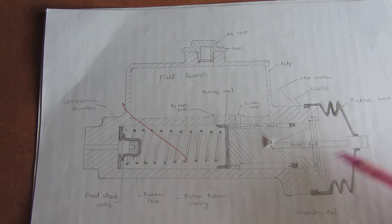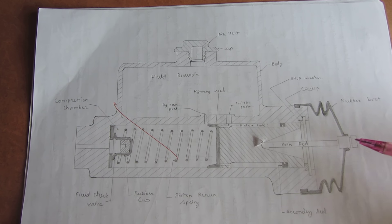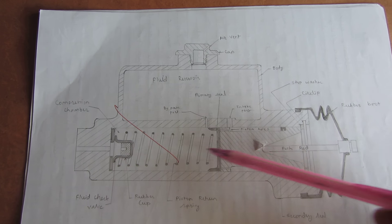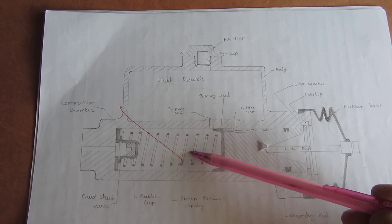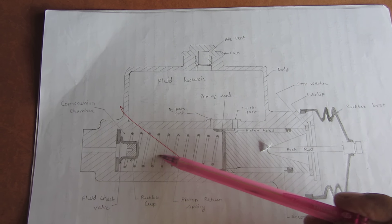This is push rod, here is our brake pedal, and this is air wind for ventilation. When we apply the brakes, the piston moves forward. Due to forward movement of piston, the fluid inside the chamber gets compressed at certain pressure which seats at the check valve.